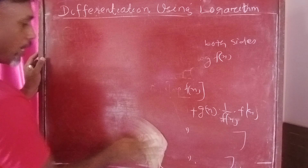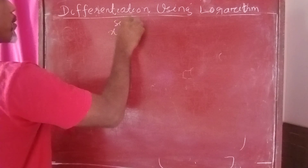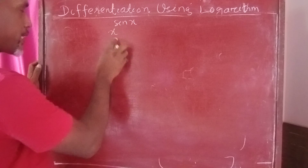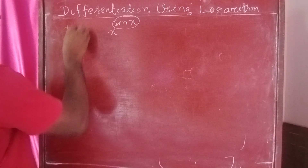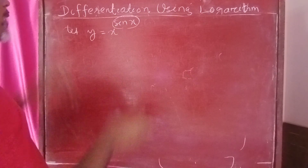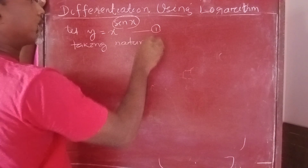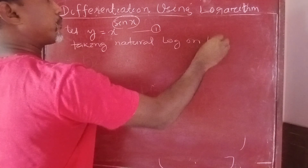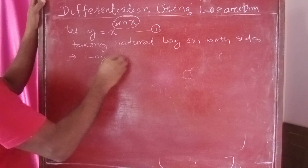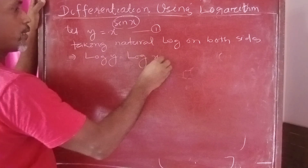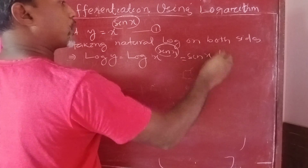Now taking an example: suppose you are given to differentiate x to the power sin x. Here the base x is a variable and the power sin x is also a variable — function to the power function. So let y equal x to the power sin x.